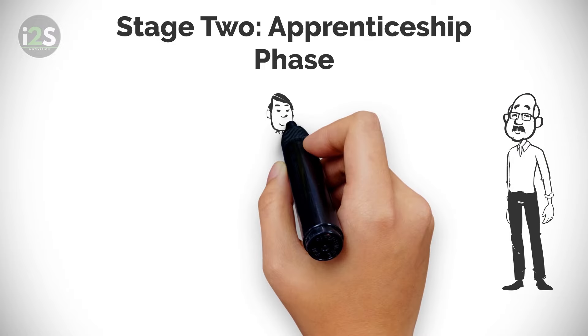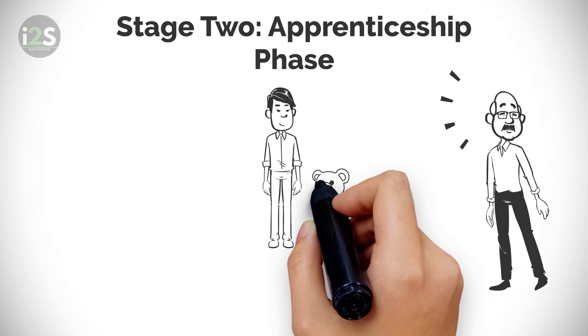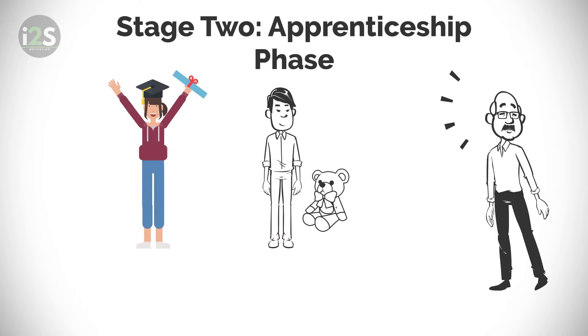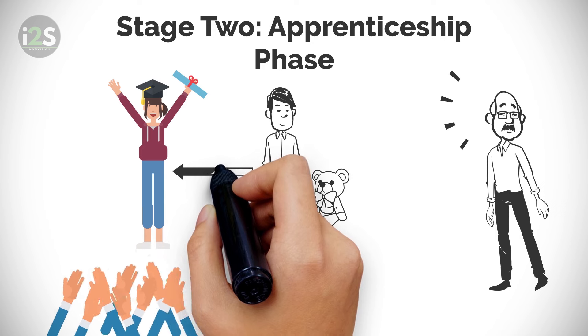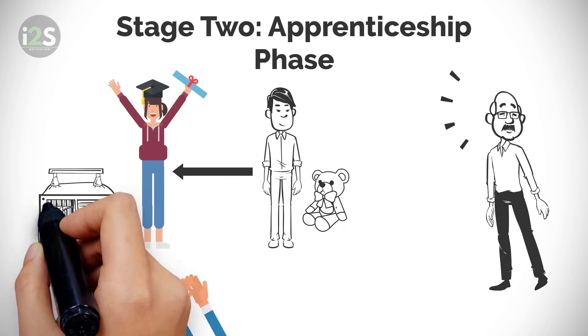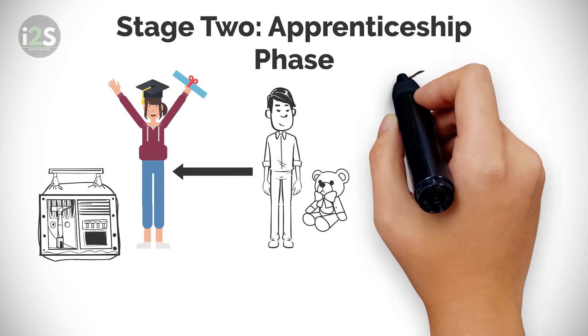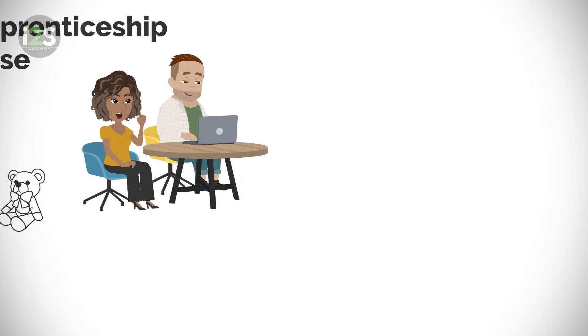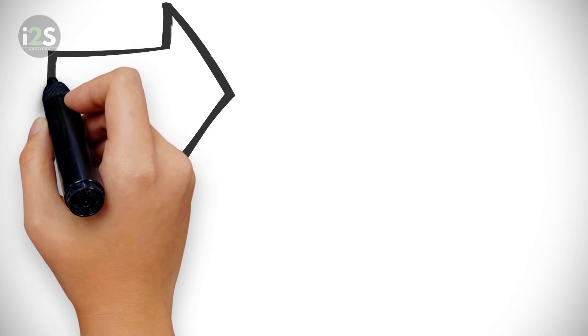We never hear stories about it, but every master you've ever heard about had their apprenticeship phase before they became a master. The reason we don't hear a lot about that stage of their lives is that that stage is a lot of struggle, not great achievements. It is super important to find a mentor or company where you can go and learn everything you can.